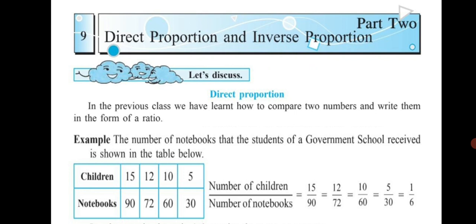10 children 60 notebooks and 5 children 30 notebooks. If we write it in the form of a ratio, we write number of children upon number of notebooks, which is equal to 15 upon 90, 12 upon 72, 10 upon 60, 5 upon 30. If we reduce these ratios, we get the answer as 1 upon 6. That's why they are shown as equal — each ratio comes down to 1 upon 6. In other words, the ratio 1 is to 6 remains the same or constant.